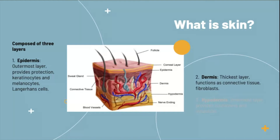The second layer is the dermis, and this is the thickest layer. It functions mostly as connective tissue because it is largely made up of extracellular matrix, but it also contains fibroblasts, hair follicles, sweat glands, blood vessels, and nerve endings — a lot of the things that connect you with your skin. Probably the most important of these for the dermis is the fibroblasts, because these secrete collagen and elastin, which provide your skin with its characteristic mechanical strength and elasticity.